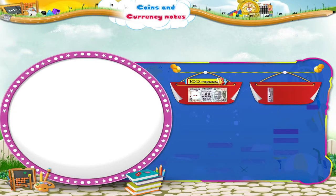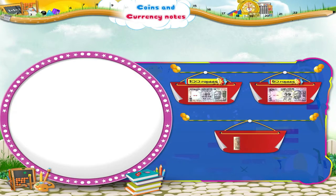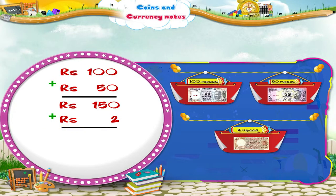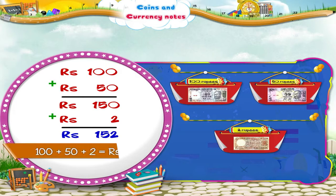Starry, can you help me do this one? A 100 rupee note, a 50 rupee note and a 2 rupee note. 100 rupees plus 50 rupees equals 150 rupees. So, 100 plus 50 plus 2 equals 152 rupees.